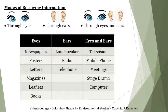Examples: Eyes — newspaper, posters, letters, magazines, leaflets, and books. We can read them through the eyes. Ears — loudspeaker, radio, telephone. We can hear the information. Eyes and ears — television, mobile phones, meetings, stage drama, computer. Here we can see and hear. We can do both. That is why we call it visual and audio.